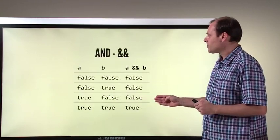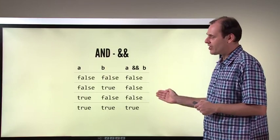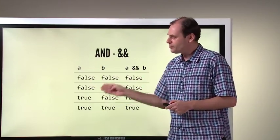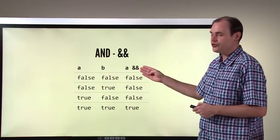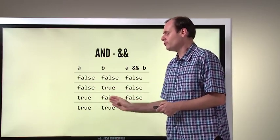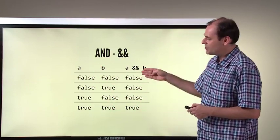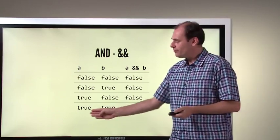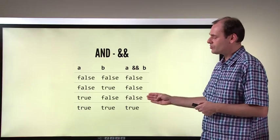An example helps to make this clearer. Sometimes people summarize it in this kind of diagram, which is called a truth table. This is the possible first input, this is the second input, and then this is the result of logical AND. False/false gives false, false/true gives false, true/false gives false, true/true gives true. In a quick English summary: if both inputs are true, the result is true; otherwise, the result is false.